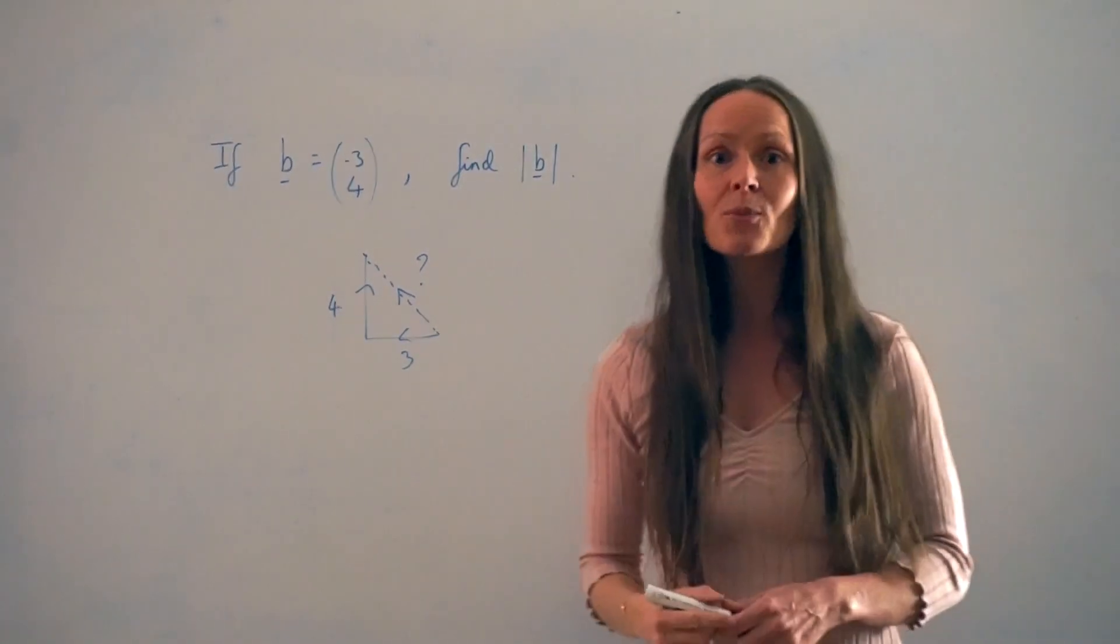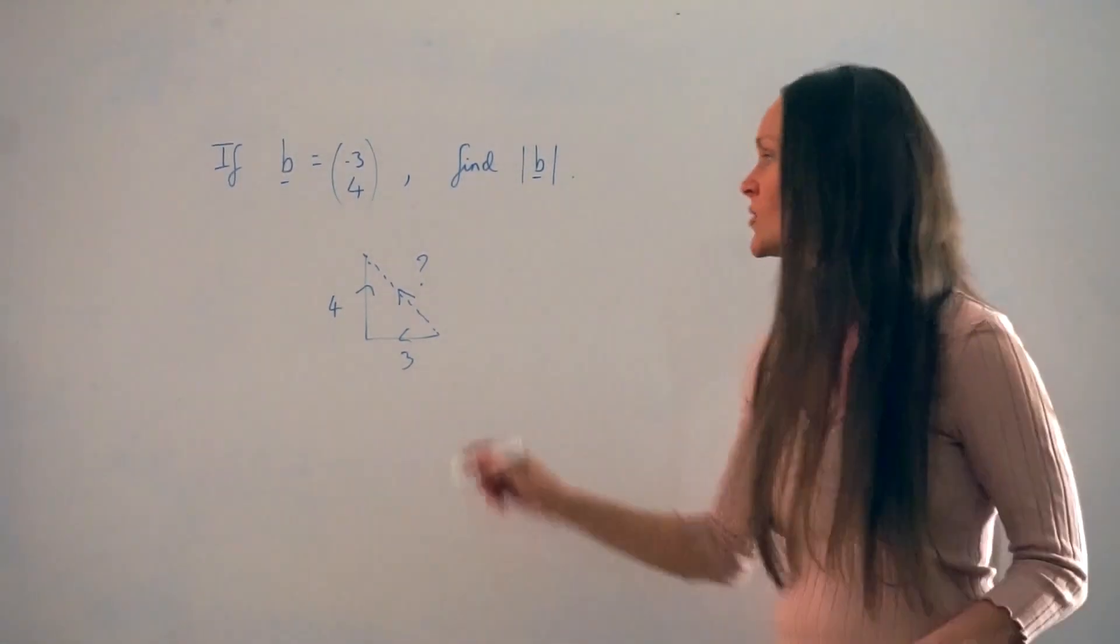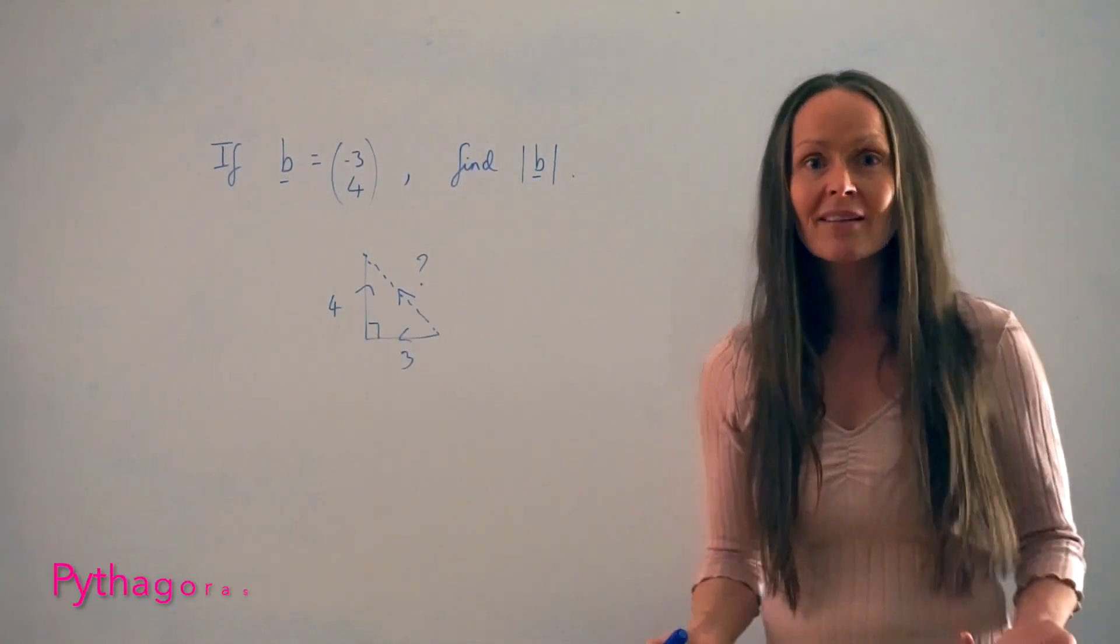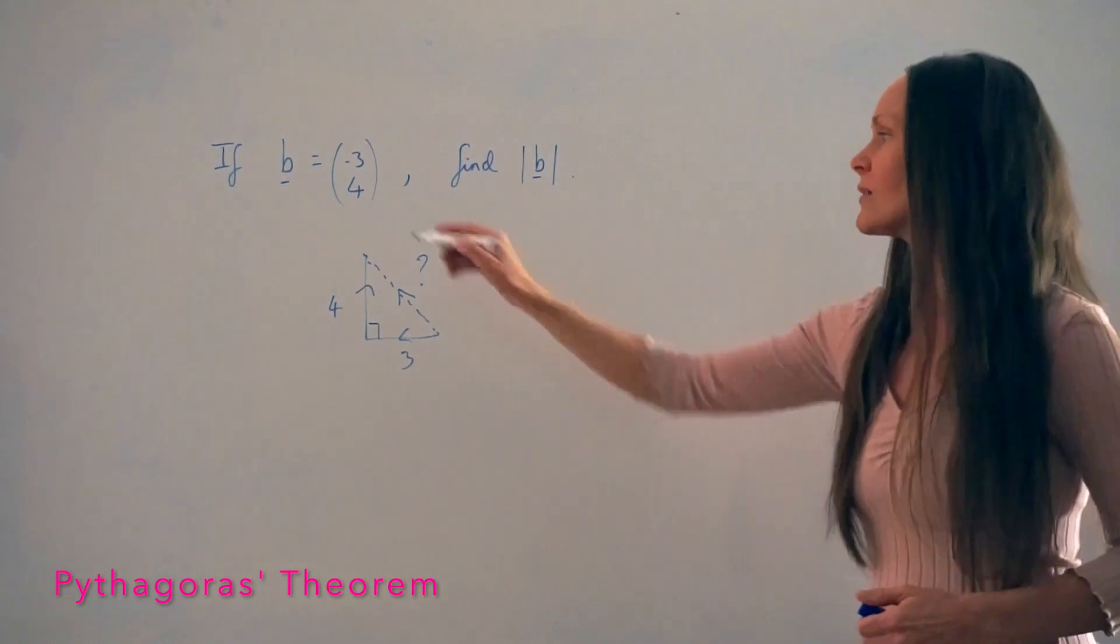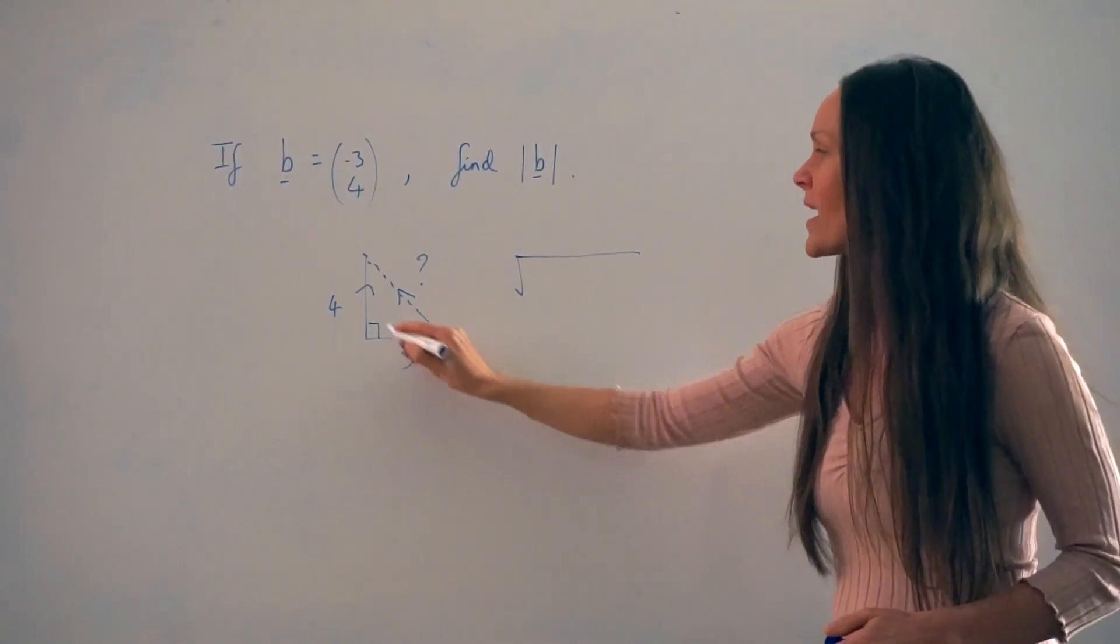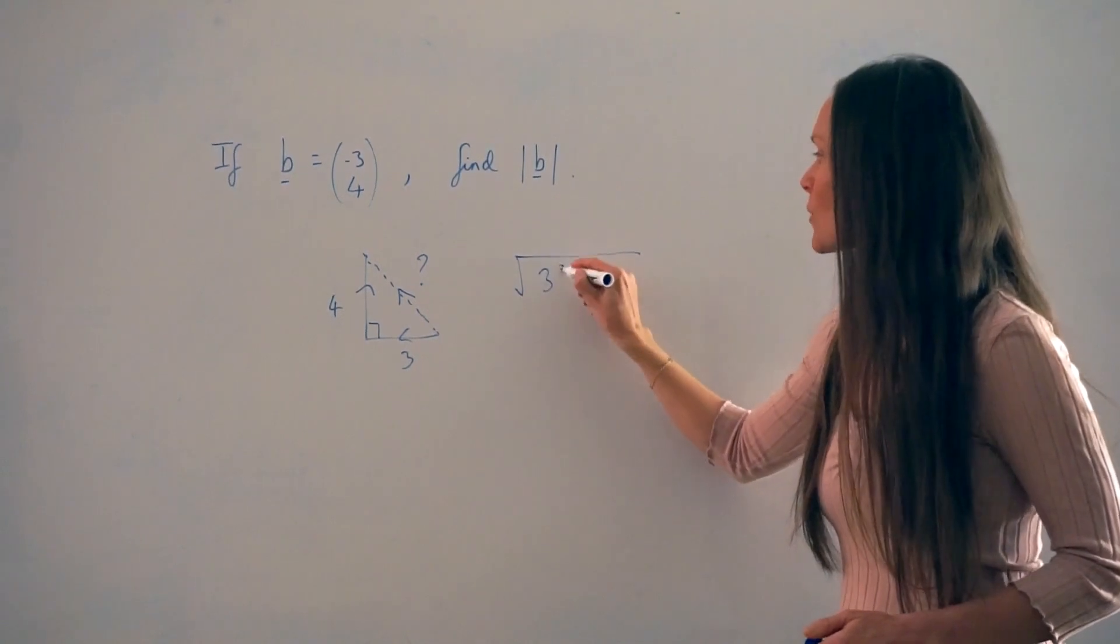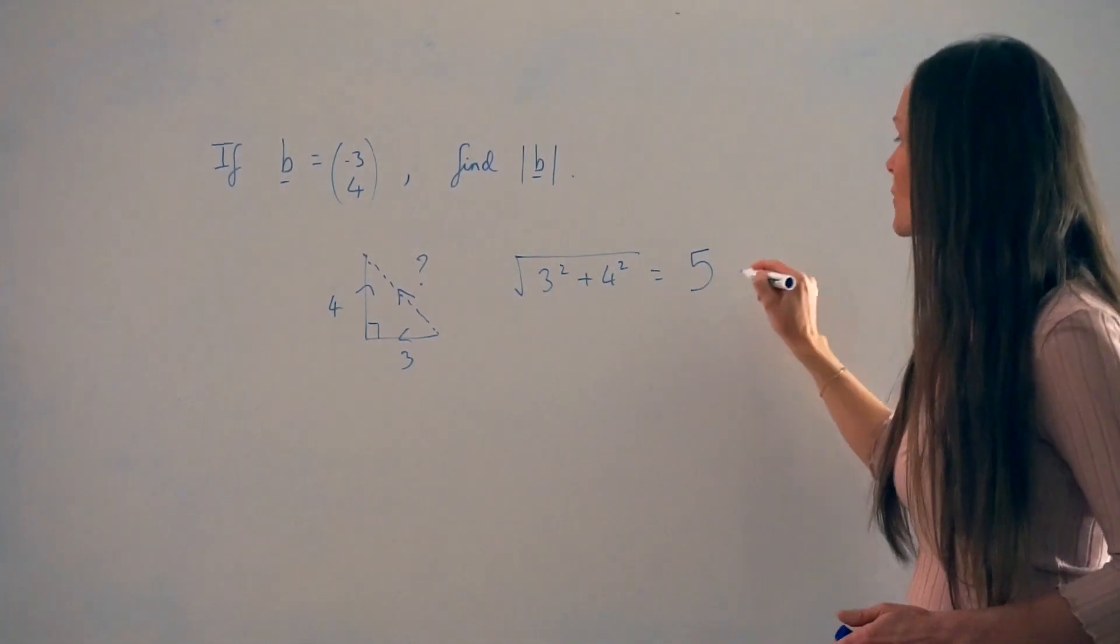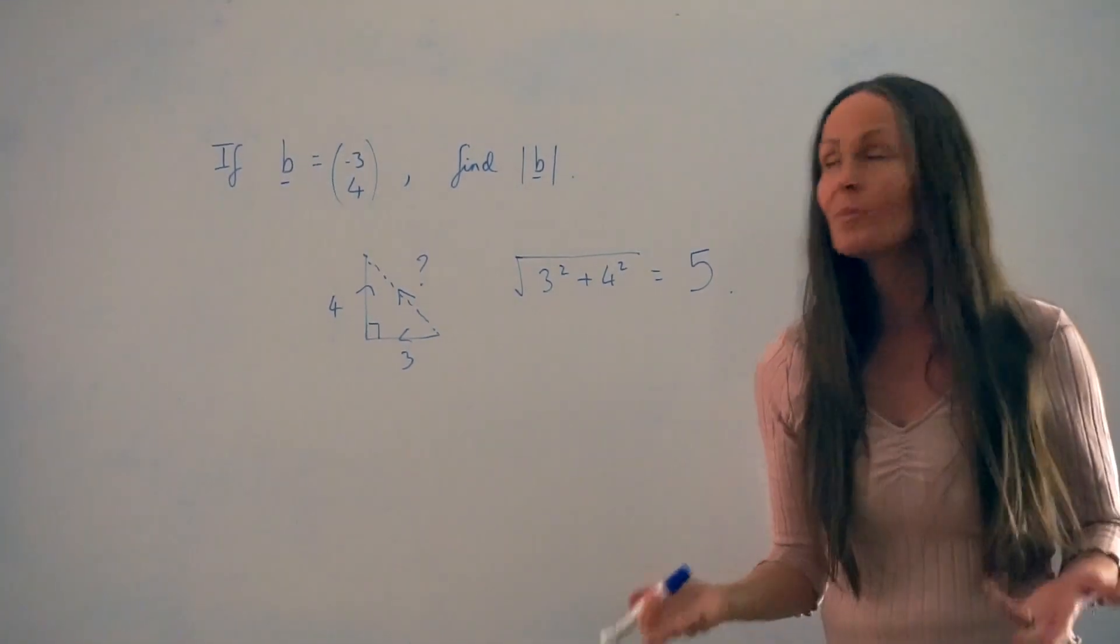So what we're trying to do is work out the length of a hypotenuse in a right-angled triangle. So to do that, I'm going to use Pythagoras' theorem. So to work out the length of the hypotenuse, I would square root the base squared plus the height squared. So 3 squared plus 4 squared. And if you calculate this, it comes to 5. So that is the modulus of vector b.